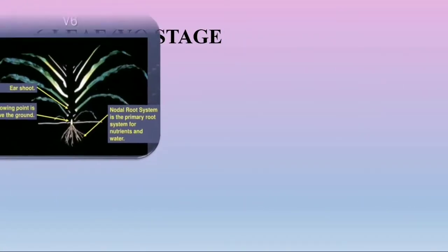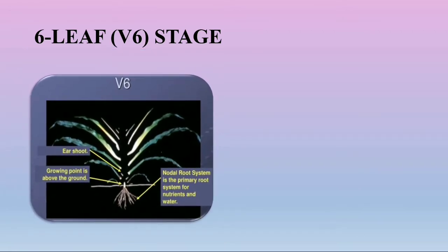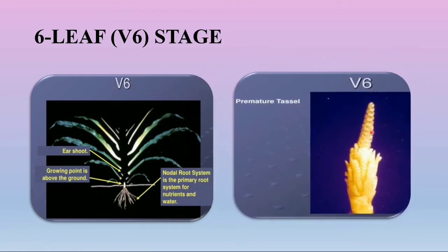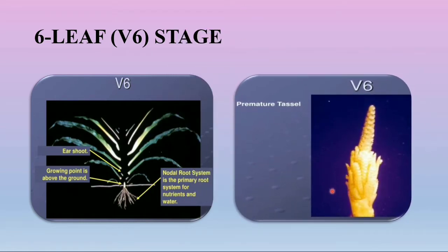You can see here in the image for the sixth leaf stage: we have the ear root visible. The growing point is above the ground level and the nodal system will be the primary root system for nutrients and water. Development of the premature tassel can also be observed at the sixth stage, as shown in the image.